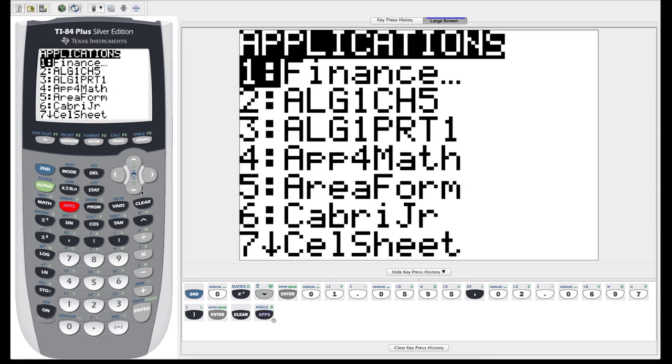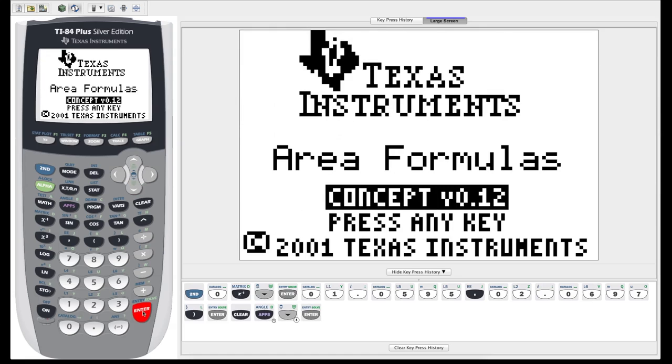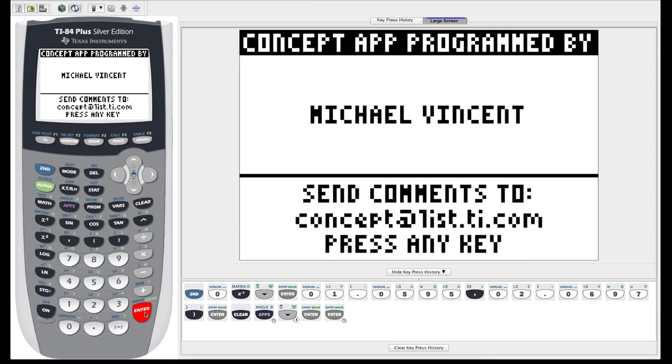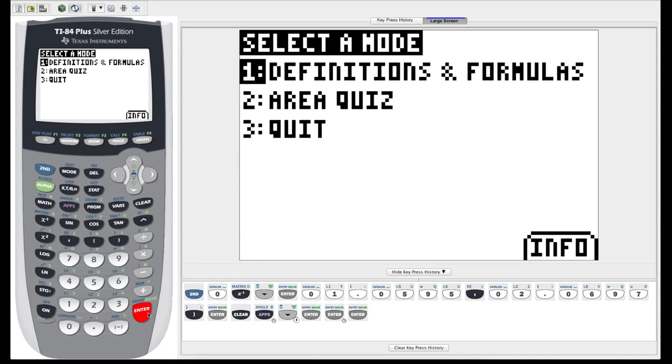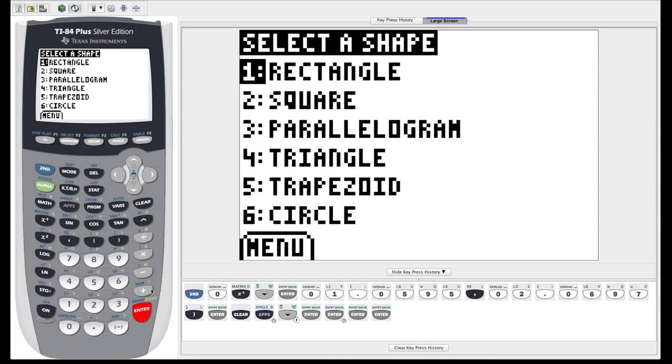But nonetheless, the first one I will show you, if we scroll down here, is number five, area form. What that will do is if we click it, it says area formulas. Sounds interesting. We hit enter again, enter again, and then it has a few modes. Number two is an area quiz, so if you were studying your area formulas, it would quiz you on them. Number one though is your definitions and formulas.